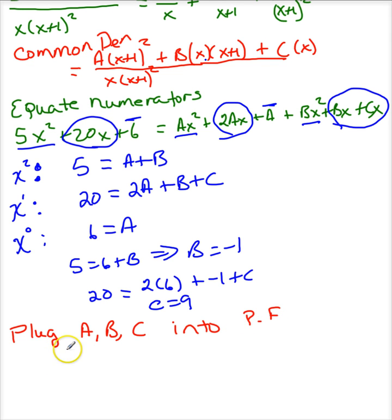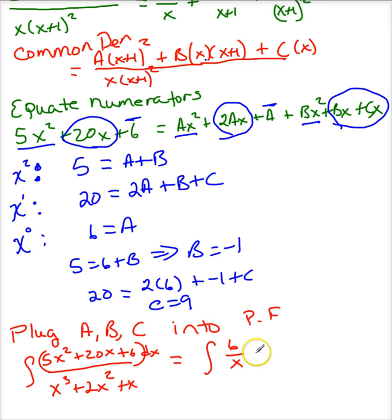So I'm going to rewrite this. So this is the integral of 5x squared plus 20x plus 6 dx over x cubed plus 2x squared plus x. And this is going to be equal to the integral of a, and a equals 6, over x, plus b, and b is negative 1, over x plus 1, plus c, which is 9, divided by x plus 1 squared dx.